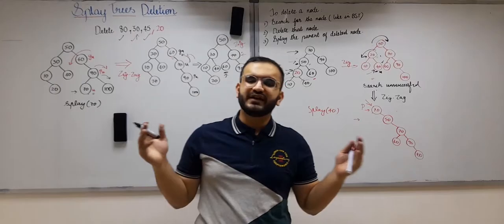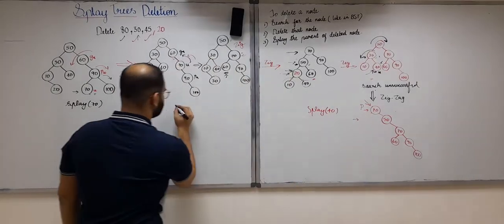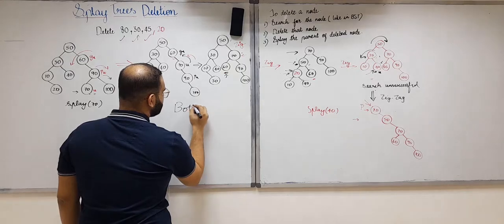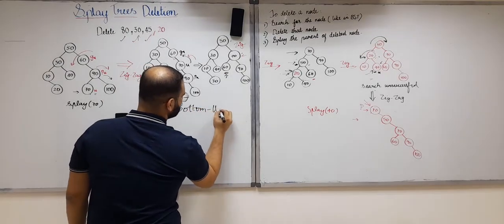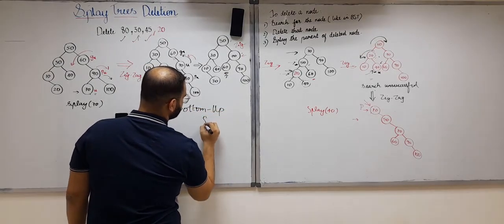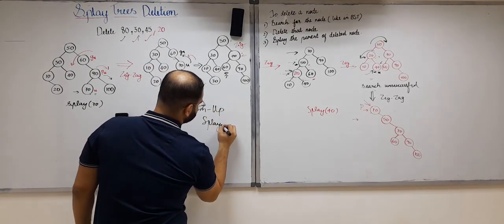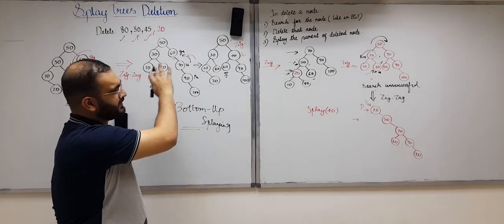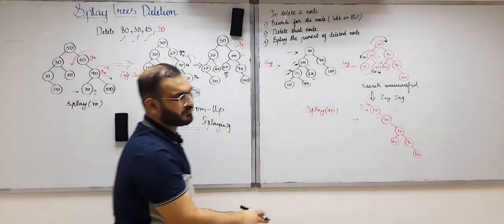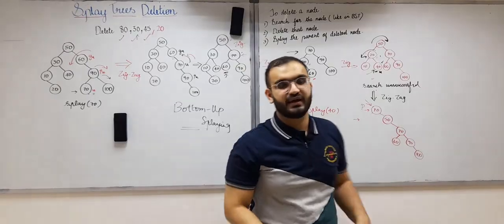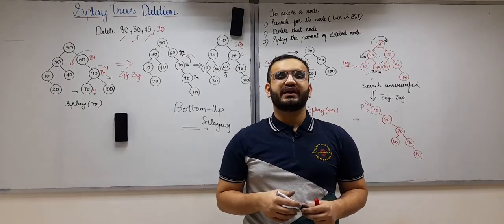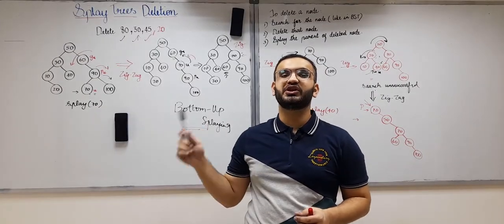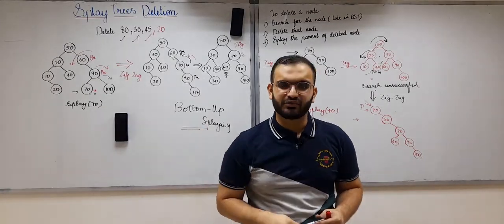What we learned right now is known as bottom-up splaying. This is bottom-up splaying applied to deletion. In the next video, we will learn how to do deletion using top-down splaying.